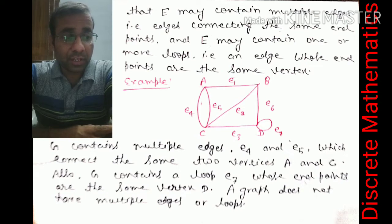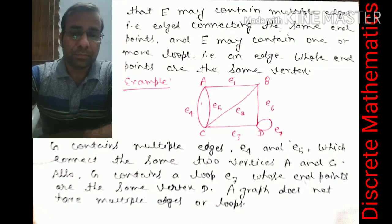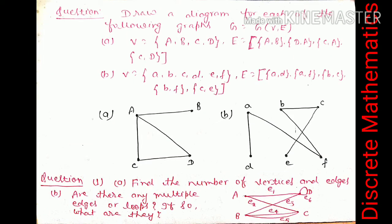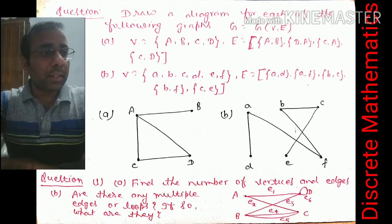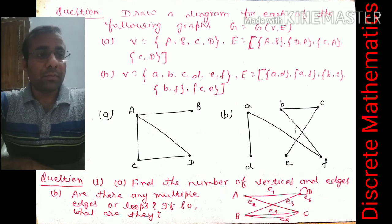A simple graph does not have multiple edges or loops. We will clarify this topic with some examples.